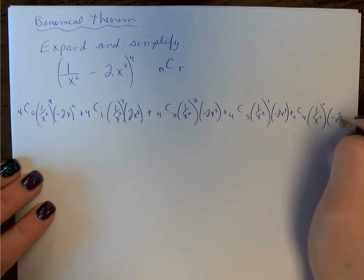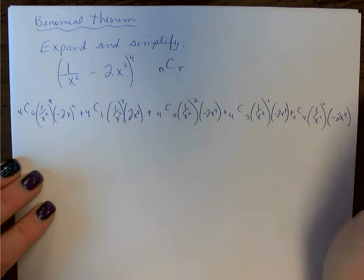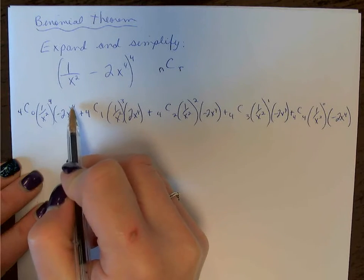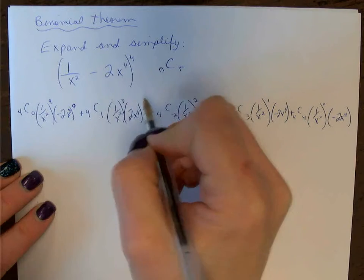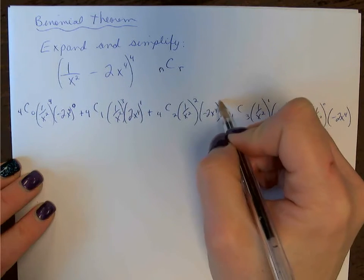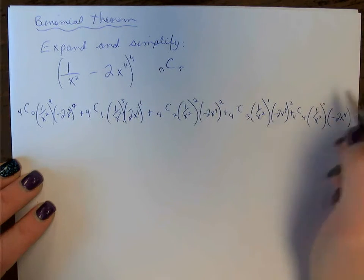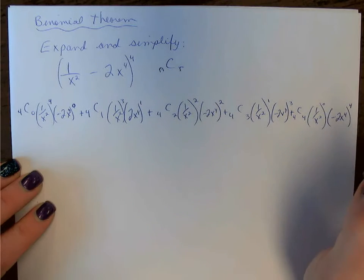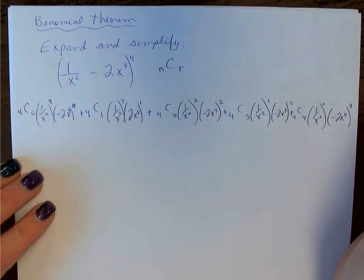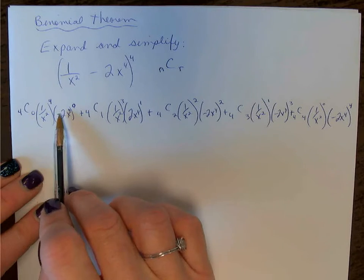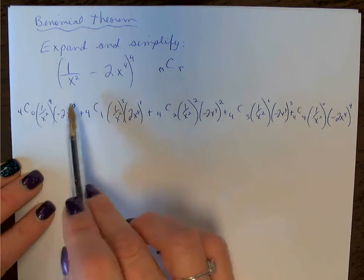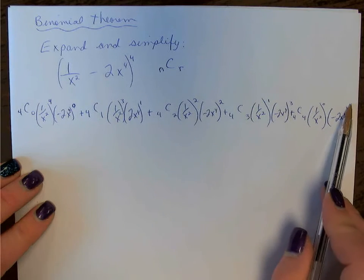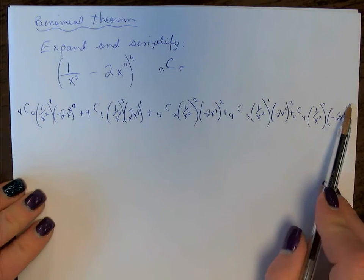I forgot to put the last term there. And then on the second term, and this 4 should be inside, 0, 1, 2, 3, 4. That's the actual rule or patterns of the exponent. So this counts 4 to 0. You count here 0 up to 4. Now we're going to evaluate each one.